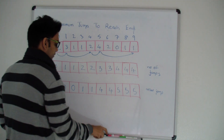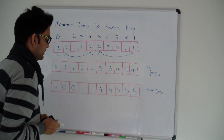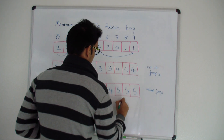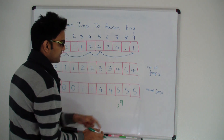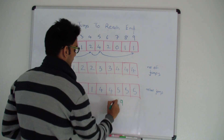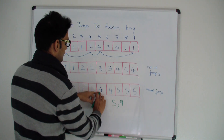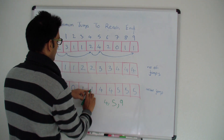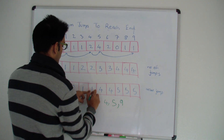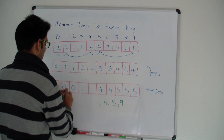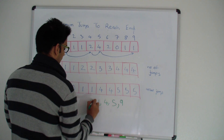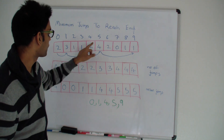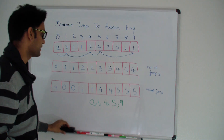If someone asks what the actual jumps are, you can use the second array to trace back the path. We know we reached nine from five, so five is part of the answer. To reach five we came from four. To reach four we came from one. To reach one we came from zero. So the path is: zero to one, one to four, four to five, five to nine — and the minimum number of jumps is four.